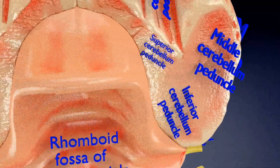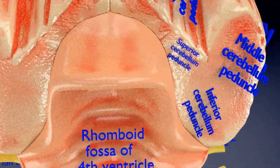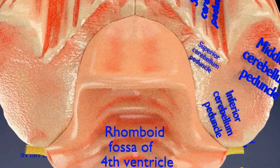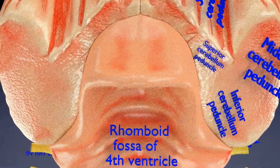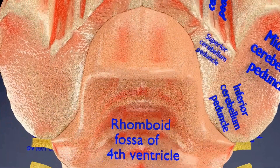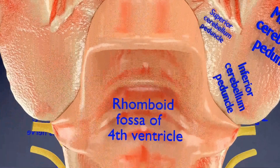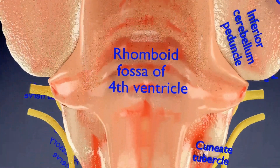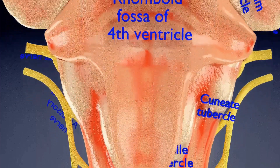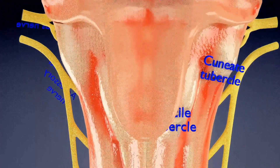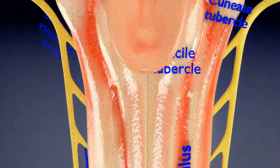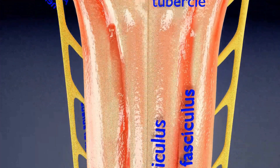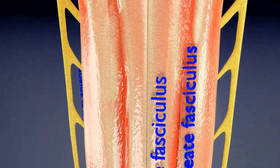The posterior part of the medulla is now visible. The dorsal surface of the medulla faces the fourth ventricle of the brain. The central canal of the spinal cord, which is an inferior continuation of the fourth ventricle, courses through the dorsal half of the medulla carrying the cerebrospinal fluid or CSF.